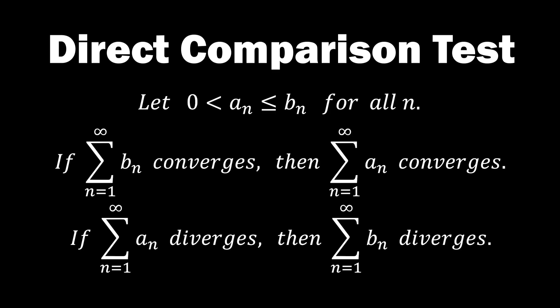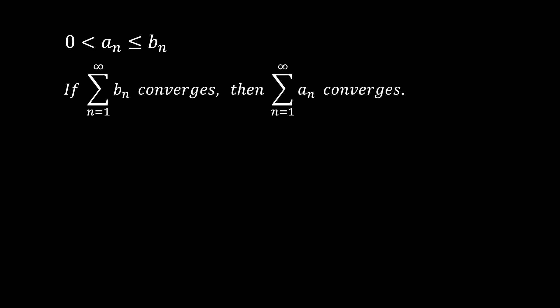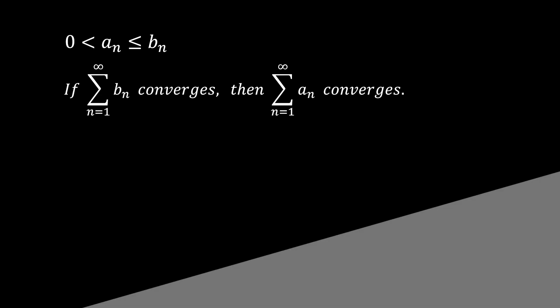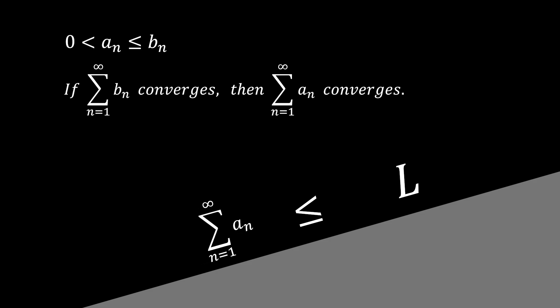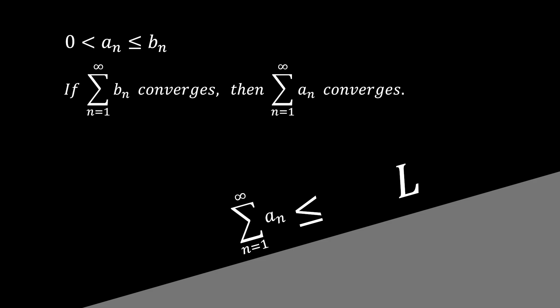To better understand why this is the case, let me illustrate it with a simple diagram. When b_n is greater than or equal to a_n, and both are positive for all n, we have the first statement of the direct comparison test. Since the infinite sum of b_n is positioned higher than a_n, if it converges to some arbitrarily positive value l, the infinite sum of a_n below must be less than or equal to l and cannot exceed it. Therefore, the sum of a_n also converges.